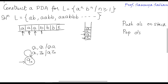Now the read header reads B. On reading B, with stack top being A, I start performing a pop operation and reach state q1. That is, I remove this A from my stack.